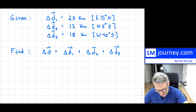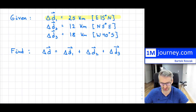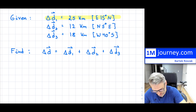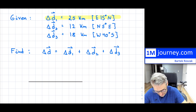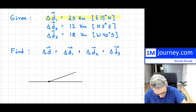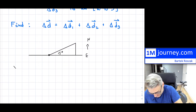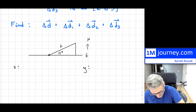Let's break the first vector down. This is a displacement of 25 kilometers, and notice it's east 15 degrees north. So if I draw this out — a flat surface here — the vector is at 15 degrees from east going north. This is the 15 degrees, so east is along the horizontal and we're tilting 15 degrees toward north.